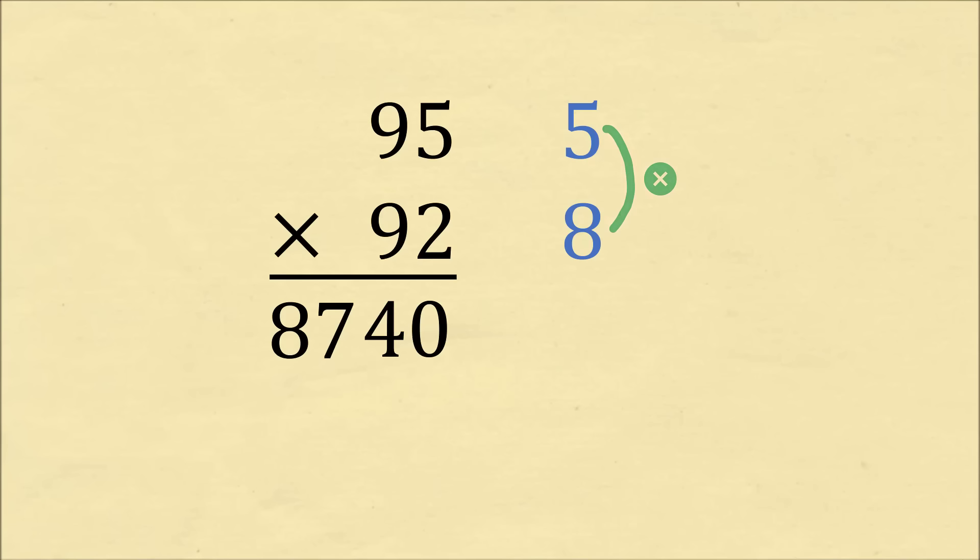Let's do one more example. What is 95 times 92 equal to? For 95, we need to add 5 to get to 100. And for 92, we need to add 8 to get to 100. 95 minus 8 is equal to 87. And then 5 times 8 is equal to 40. So 95 times 92 is equal to 8740. Amazing!